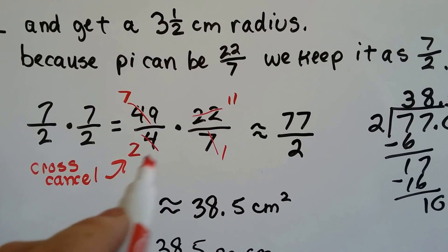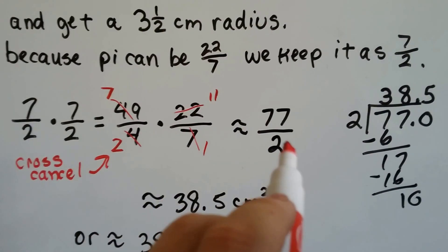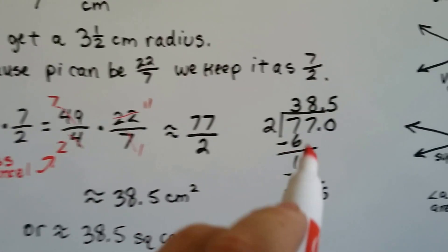With the 4 and 22, they're divisible by 2. So there's two 2s in the 4 and eleven 2s in the 22. So that becomes a 2, that becomes an 11. Now we can just do 7 times 11, which is 77, and 2 times 1, which is 2.